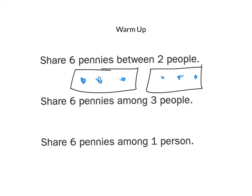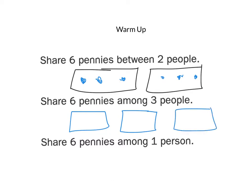If you share six pennies among three people, how many pennies would each person get? Each person should get two pennies. And if you share six pennies among one person, they're going to get all six pennies.